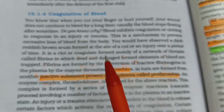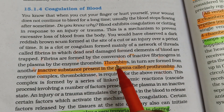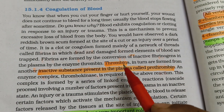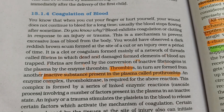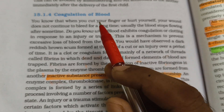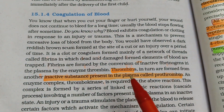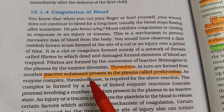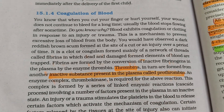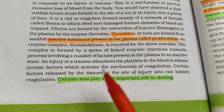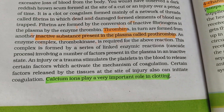In the coagulation of blood, thrombin is derived from an inactive substance present in the plasma called prothrombin. Calcium ions play a very important role in the clotting process.